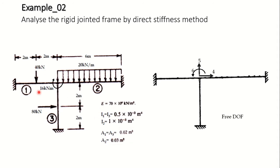Looking at the loading, these are the loads applied. On the first member there is a concentrated load of 40 kN at mid span. The second member carries a UDL of 20 kN/m. The third member has a force of 80 kN applied towards the right at the center of its length. Additionally, at the joint where all three members are connected, there is a clockwise couple of 16 kN·m.